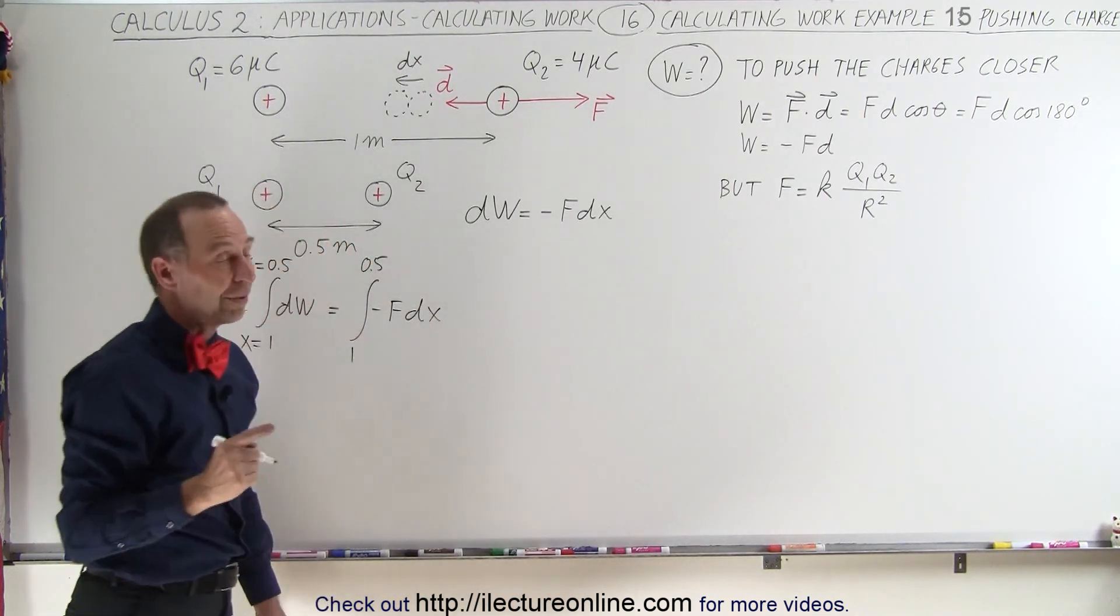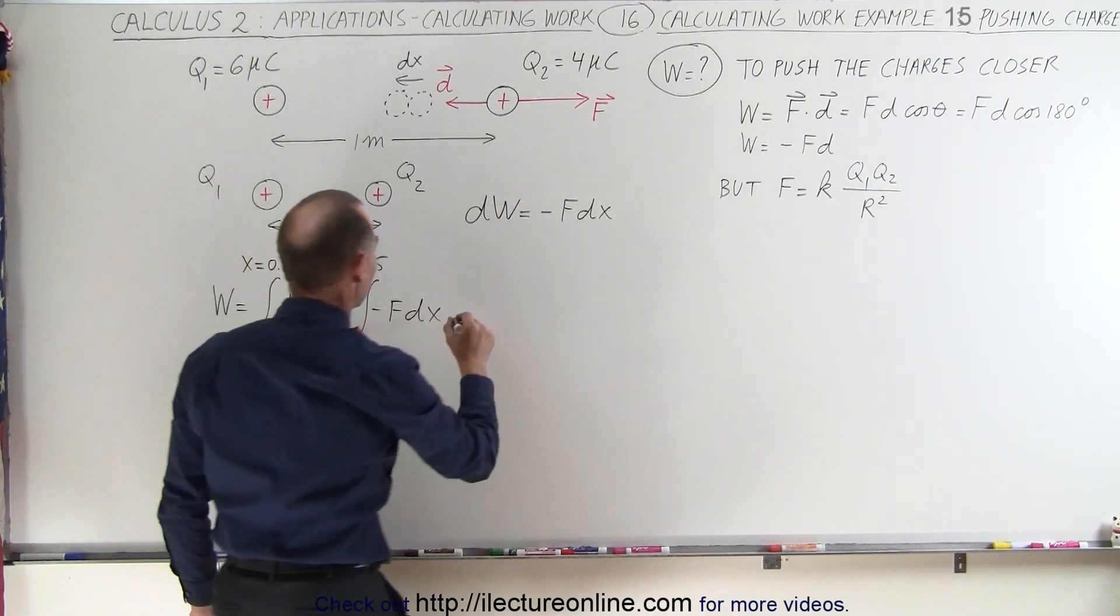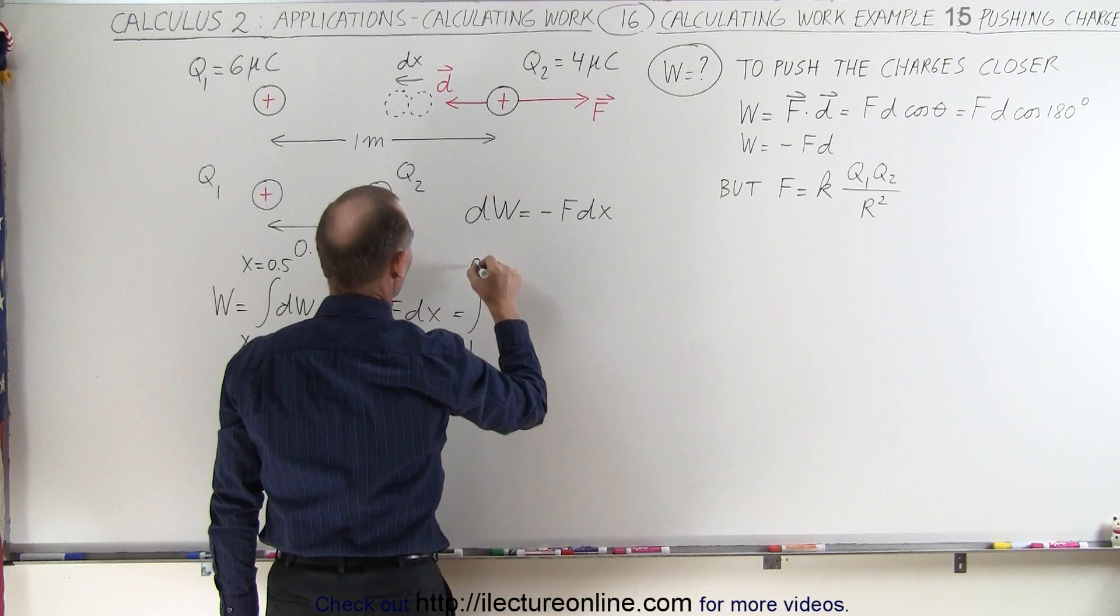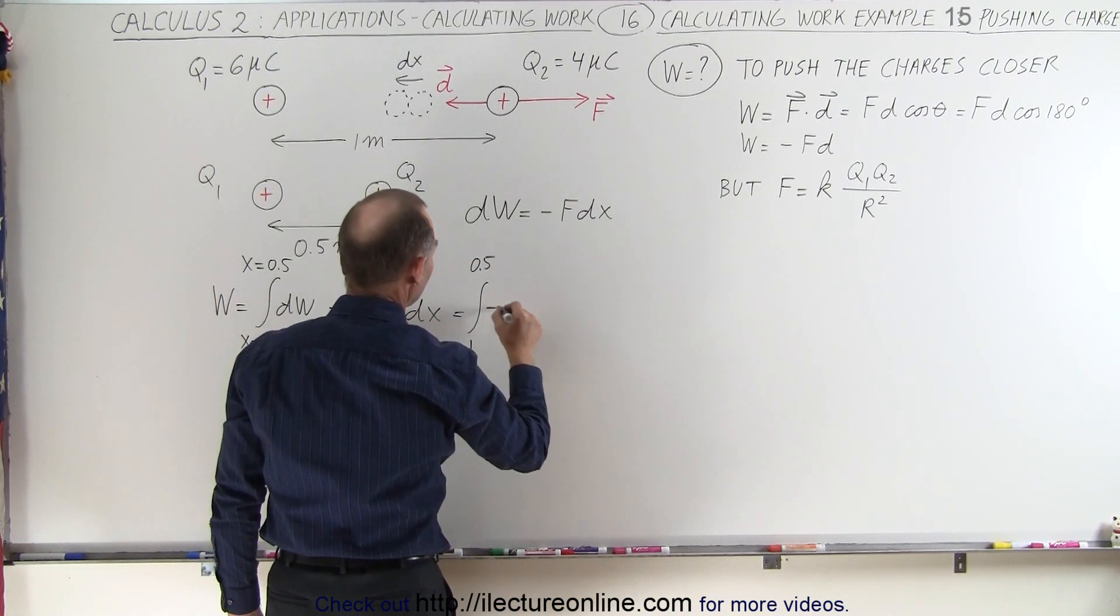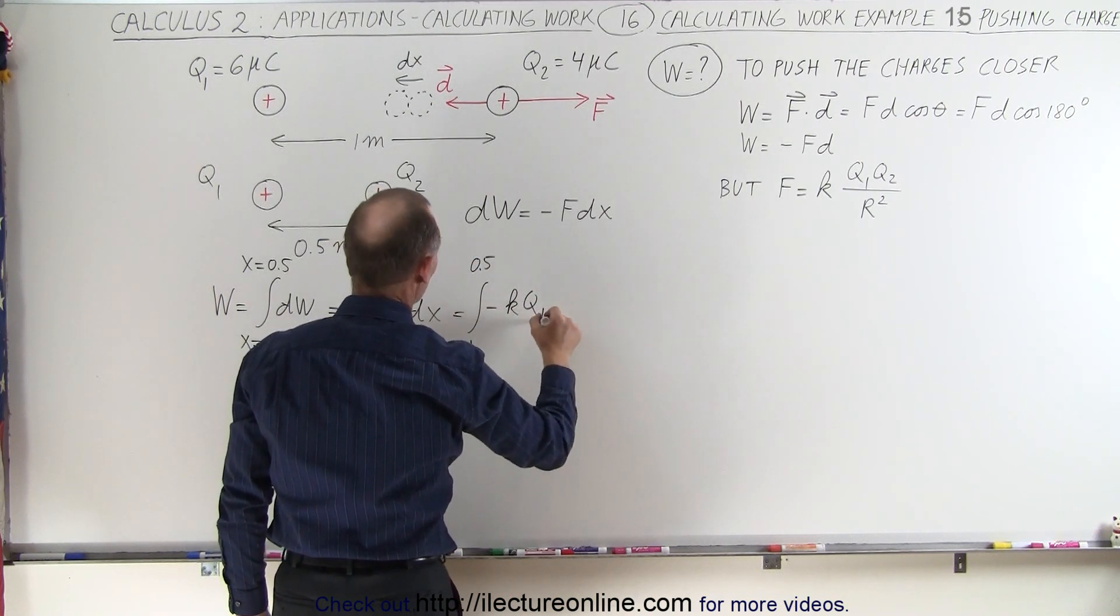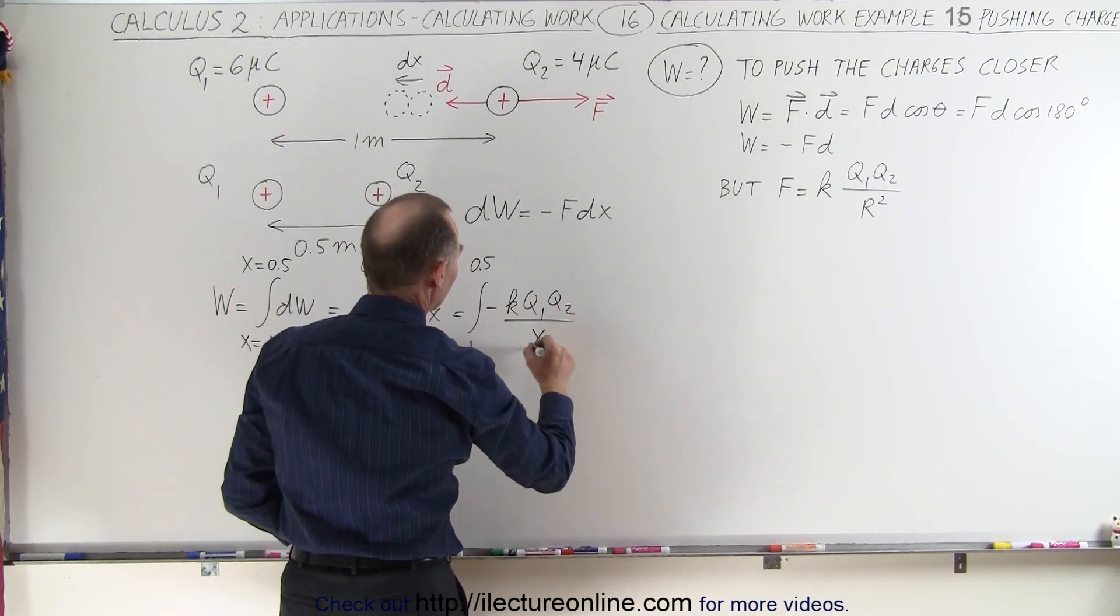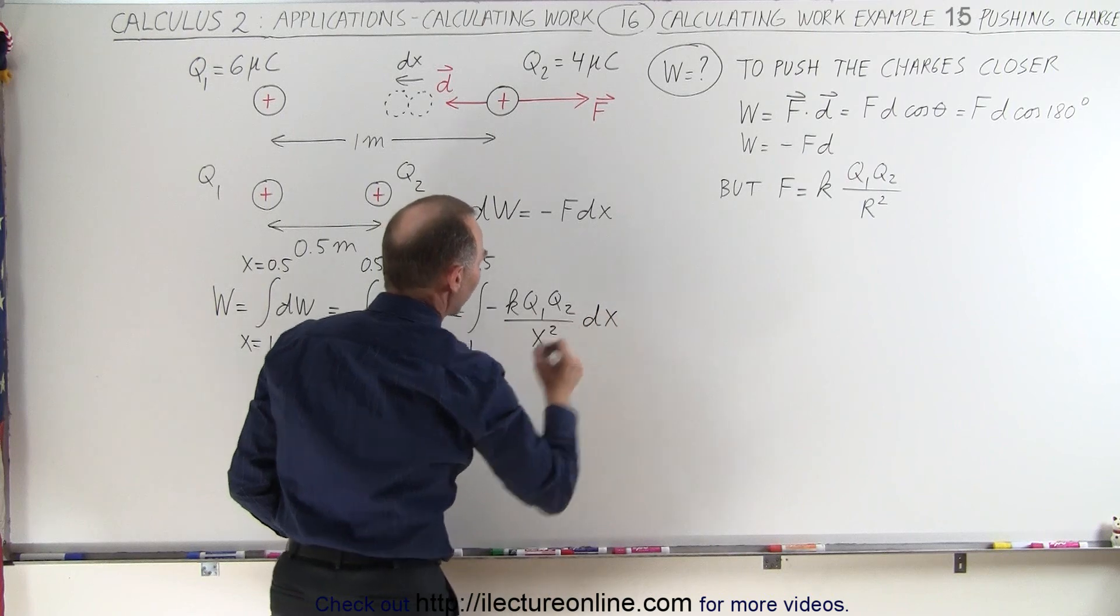And then, of course, instead of f, we write the equation there. This is equal to the integral from 1 to 0.5 of minus kq1q2 divided by, instead of r squared, we'll use x squared times dx.